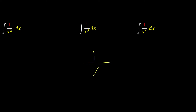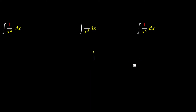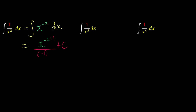Just a reminder: 1 over x to the power of n can be written as x to the power of negative n, so we flip the power and bring it up. For 1 over x squared, we bring it up to x to the power of negative 2 and integrate with respect to x. The power increases by 1: negative 2 plus 1 is negative 1, divided by the new power negative 1, plus C. Since we have x to the power of negative 1, we flip it back: it becomes 1 over negative 1 times x, plus C.